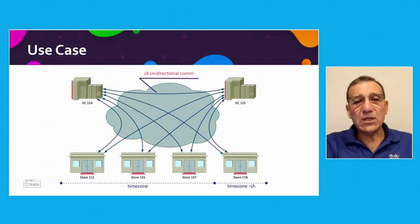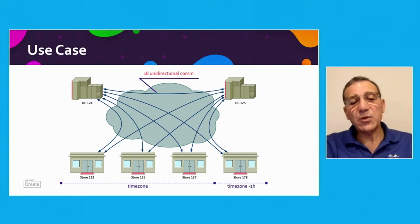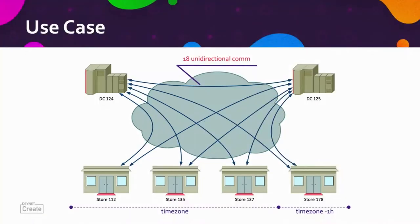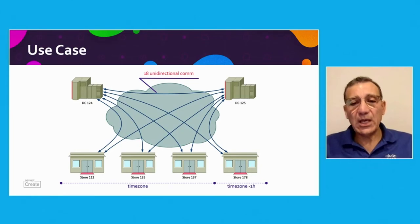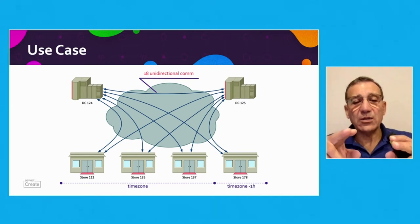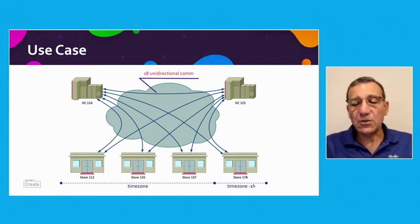We look at the specific use case here that we're using for this example or demo, where we have business applications that are housed in two data centers, that's typical for resiliency, for a trading enterprise. And for that enterprise, we take a subset of systems here, which is actually four of their trading locations. And these four trading locations reside in two different time zones.